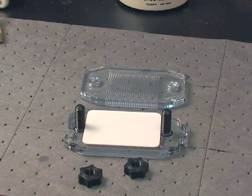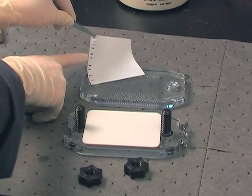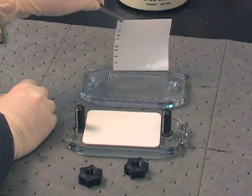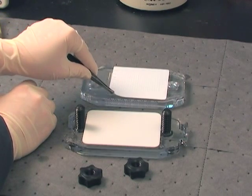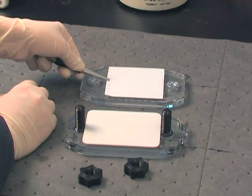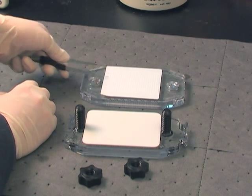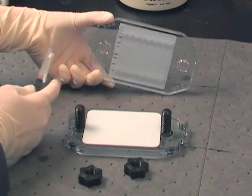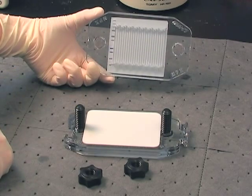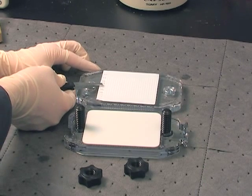After blocking the western blot for one hour, remove it from the blocking buffer, remembering to handle it with clean forceps and only by the outside edges. Position the molecular weight marker ladder on the top left with the largest molecular weights at the top of the membrane. To properly situate the membrane on the top plate, lay the membrane protein side down and align the ladder to the leftmost lane. It may be necessary to pick the plate up and check the position by looking through the top of the plate. Try to work quickly as it is important not to allow the membrane to dry out.